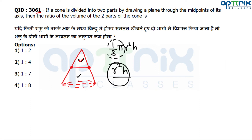I am telling you quickly — don't worry about the general radius and height here. Because if we take any special cone, the answer will always be correct. Every cone gives the same ratio, so why not take a special cone? I will take height = 1 and radius = 1. Then the small upper cone's volume will be proportional to 1.